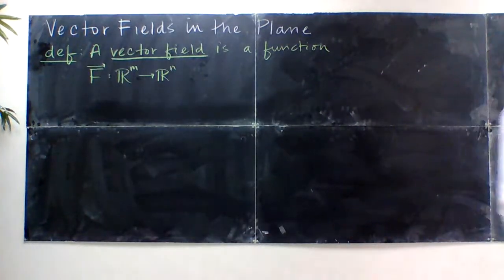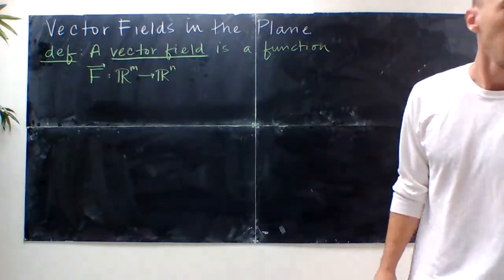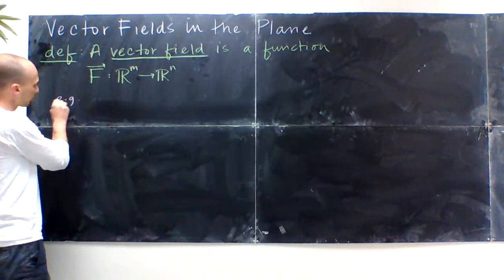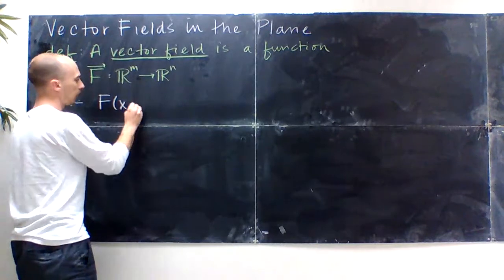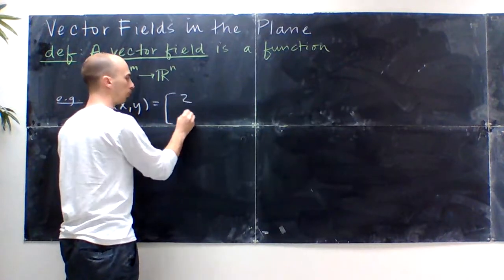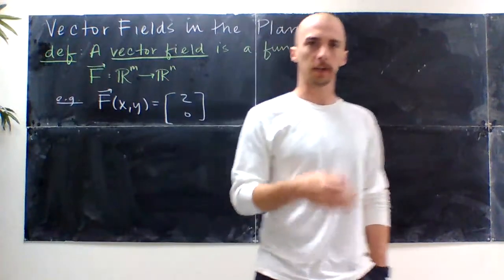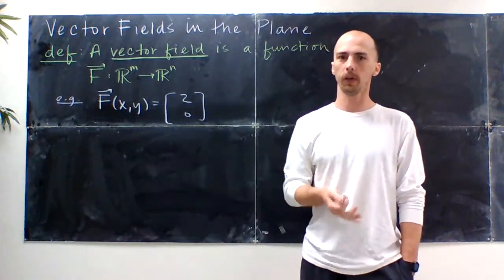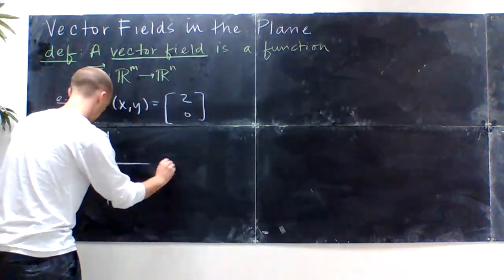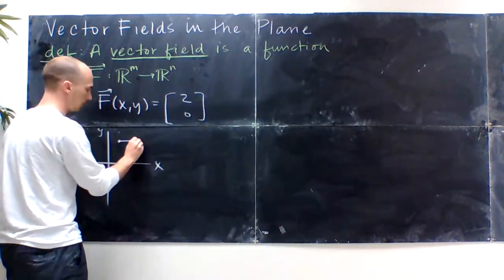What I need to do first is write down a couple of examples and draw some pictures to convince you that you've maybe seen this before. The first example is f of x and y equal to the vector (2, 0). That means for any x and y, it spits back that same vector — over 2 and up 0. So at any point x and y, it just goes to the right by 2.